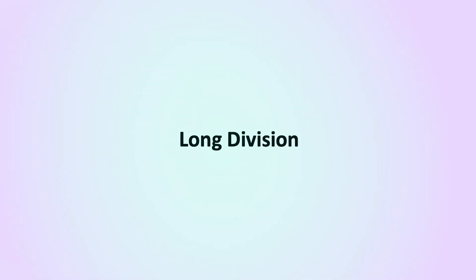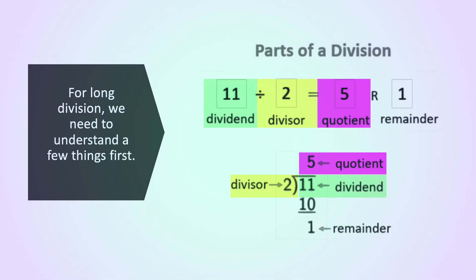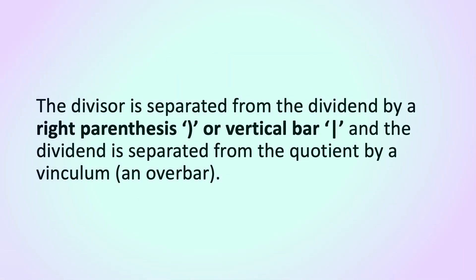Long division. For long division, we need to understand a few things first. The parts of a division. We have a dividend, 11, divided by a divisor, 2, which equals our quotient, 5, and R — which means remainder — and here we have a 1. The divisor is separated from the dividend by a right parenthesis or vertical bar, and the dividend is separated from the quotient by a vinculum, an overbar.